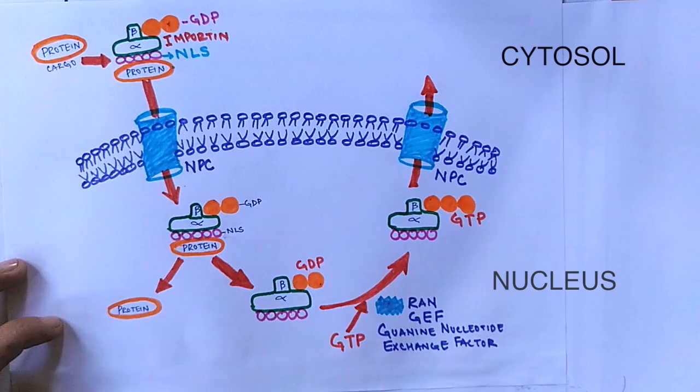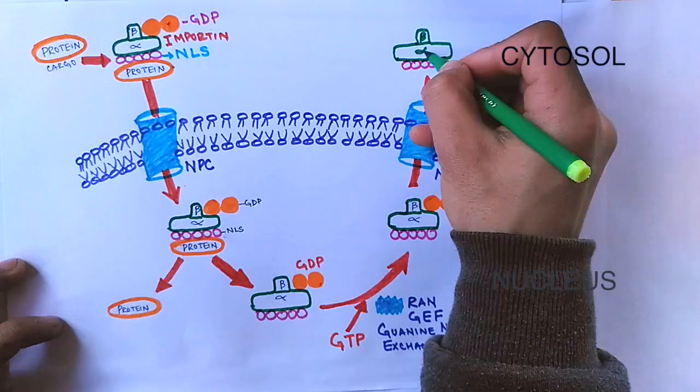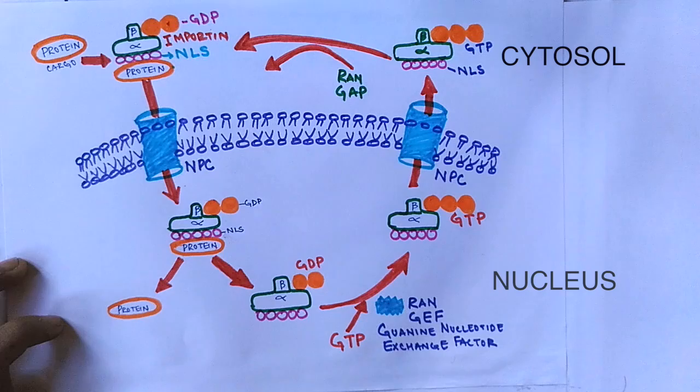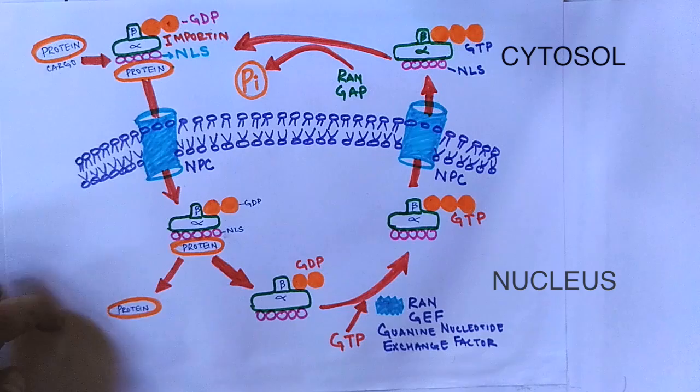After this, the importin-NLS complex is driven outside of the nucleus with the help of GTP which has got attached to it in the previous step. Here in the cytosol, the RAN-GAP, that's GTPase activating protein, hydrolyzes GTP to GDP again and releases one phosphate, and we get the GDP form of the importin complex.